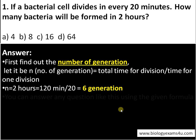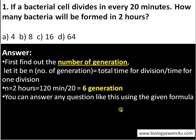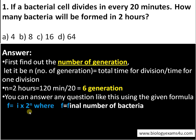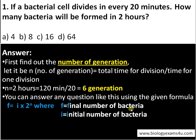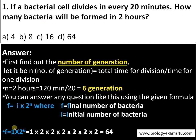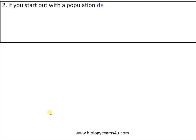That gives 120 divided by 20, which equals 6 generations. We use the formula F = I × 2^N, where F is the final number of bacteria and I is the initial number of bacteria. Here the initial number is not given, so it is taken as 1. Therefore: 1 × 2^6 = 64, which is the answer.